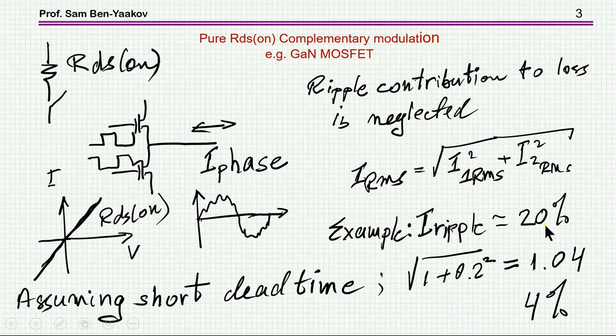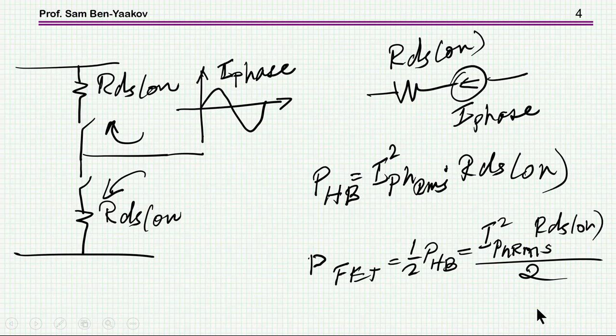So for example, if you have a ripple of 20%, then the RMS, then taking into account the ripple is 1.04, that is only 4%. So in this estimate, which is an approximate estimate, I'm neglecting the ripple. Once you do that, things become very, very simple.